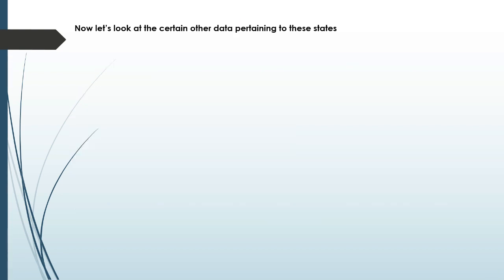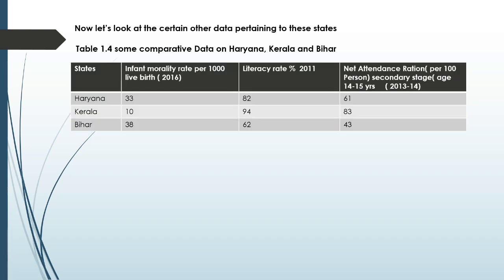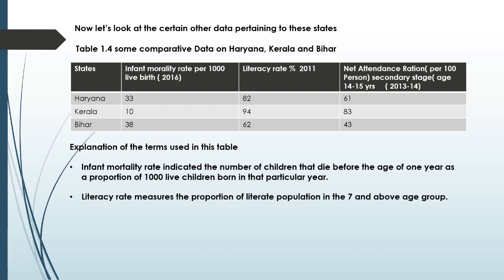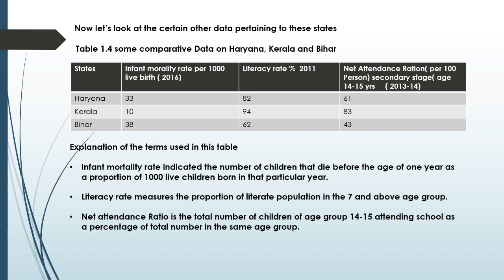Now look at the other important attributes, or criteria. For this let's see table 1.4 in your book. In this table, three more important attributes are taken which indicate health and education. They are: infant mortality rate, literacy rate, and net attendance ratio. Infant mortality rate indicates the number of children that die before the age of one year as a proportion of 1000 live children born in that particular year. Literacy rate measures the proportion of literate population in the seven-and-above age group. Net attendance ratio is the total number of children of age group 14–15 attending school as a percentage of the total number in the same age group.